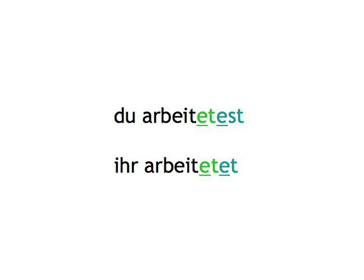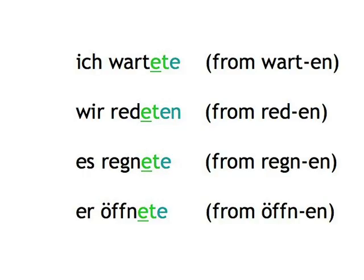Just say it a few times and you'll never have to think about it again. Some other verbs whose stem ends in T, D, and N insert an e to make the simple past T audible: ich wartete, from warten; wir redeten, from reden; es regnete, from regnen; er öffnete, from öffnen.